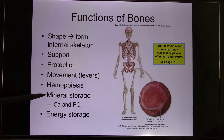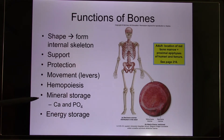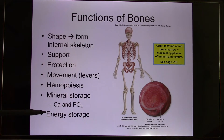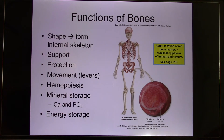Also, mineral storage in the bone — the bone matrix is mainly the calcium and phosphate group. And energy storage: in the bone marrow, the yellow bone marrow is for energy storage.